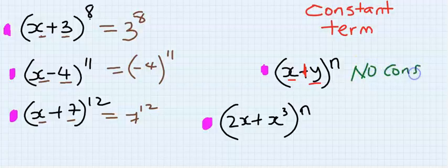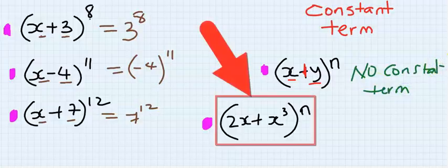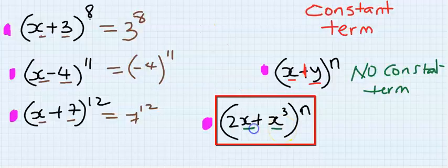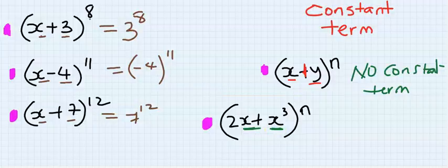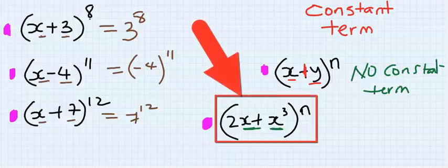No constant term. If you have the same variable, either x, x, or y, y, or p, p, constant term exists. And you are going to apply the rule I will teach you in this video. And many questions in constant term usually come in this order.